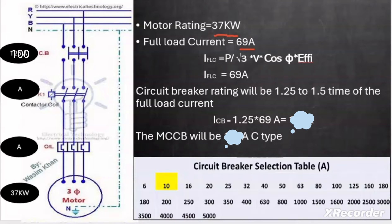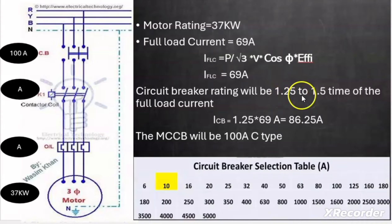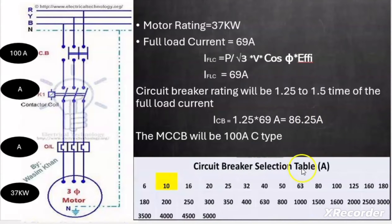You can also calculate the full load current using a formula. The circuit breaker rating will always be 1.25 to 1.5 times the full load current. Here I took the safety factor as 1.25, so the circuit breaker rating is 1.25 × 69A = 86.25A. Since circuit breakers come in standard sizes, we select the next higher standard size, which from the selection chart is 100 ampere.